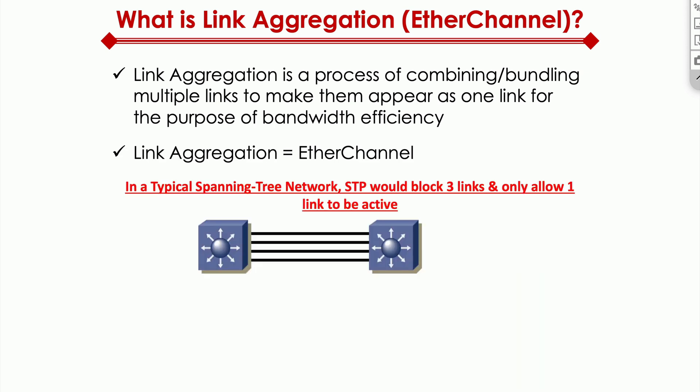Why do we need an EtherChannel? In a typical spanning tree network, spanning tree is very inefficient. If there are two switches connected with four links in between, spanning tree is going to block three links to avoid loops, leaving only one link up.